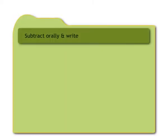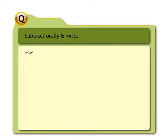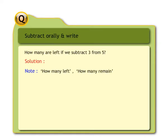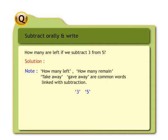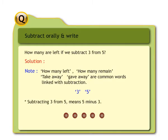Let us subtract orally by counting in our mind and then write the answer. Question: how many are left if we subtract three from five? Note that 'how many left,' 'how many remain,' 'take away,' and 'gave away' are common words linked with subtraction. Since three and five are small numbers, we can calculate in our mind. Subtracting three from five means five minus three. Think of five dots — only two dots remain. Hence two is left if we subtract three from five.